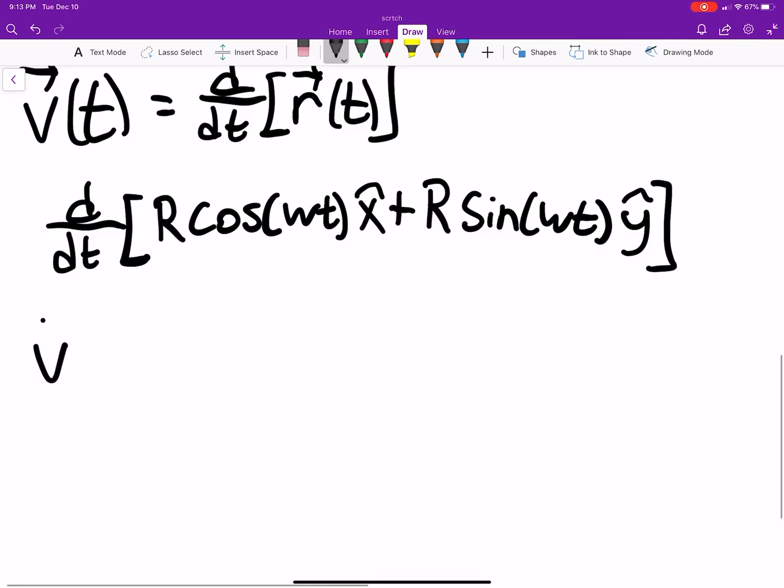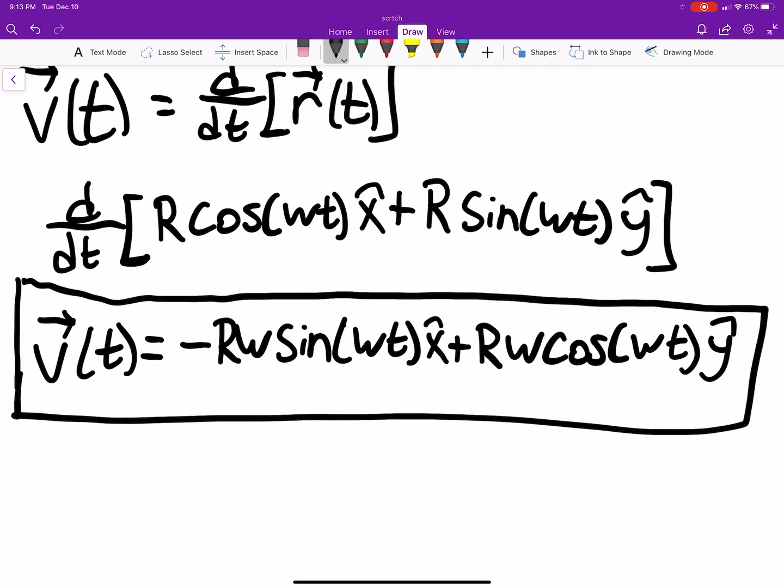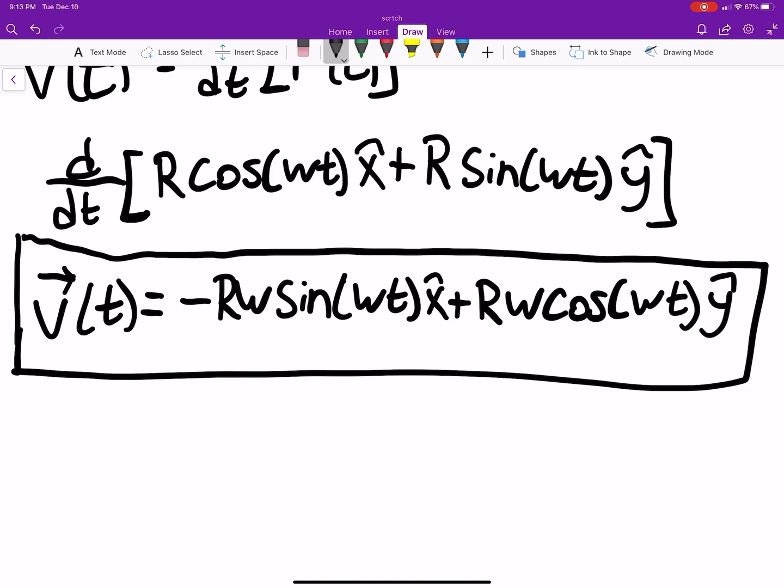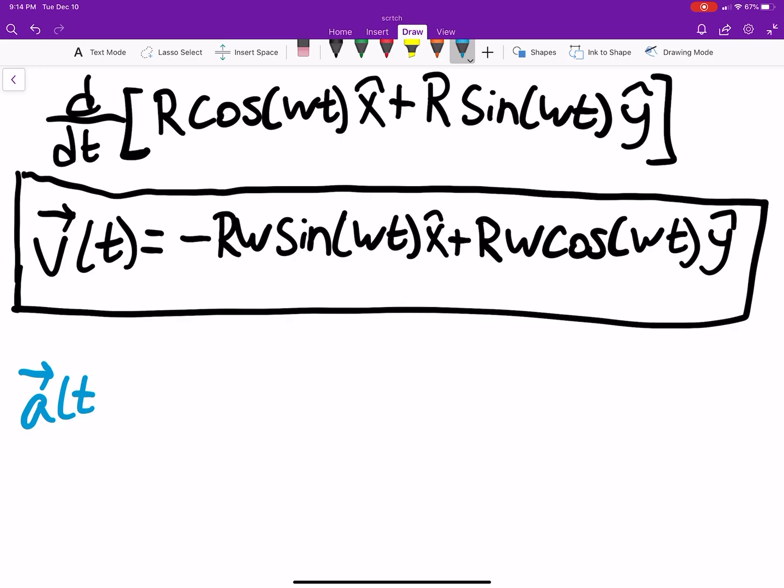And if you're not comfortable with that derivative, v as a function of time is going to be negative r omega sine of omega t x hat plus r omega cosine omega t y hat. If you're not comfortable with that derivative, I think I've talked about the chain rule before in a previous video. I could do a calculus series if this part is tripping you up, but I would imagine if you're at this level of physics you're pretty good with your calculus. But we can always review it.